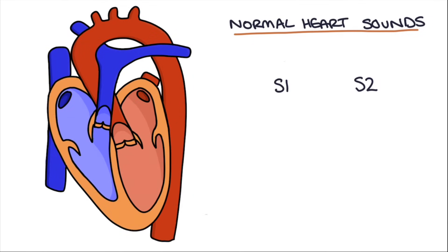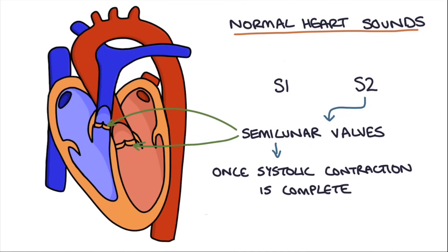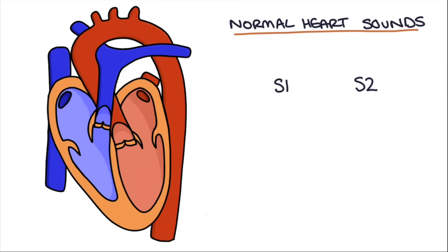The second heart sound, or S2, is caused by the closing of the semilunar valves, and this is the pulmonary and the aortic valves, once the systolic contraction is complete. This is to prevent blood flowing back from the pulmonary arteries or the aorta into the ventricles. This S1 and S2 can be heard during auscultation of the heart sounds as a lub-dub sound. Let's have a listen to that now.